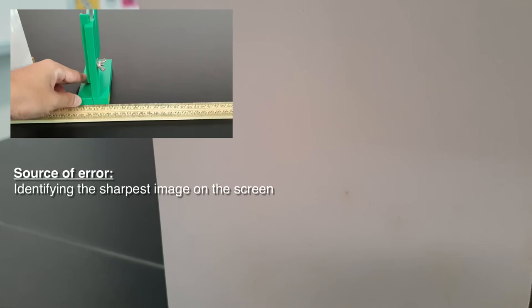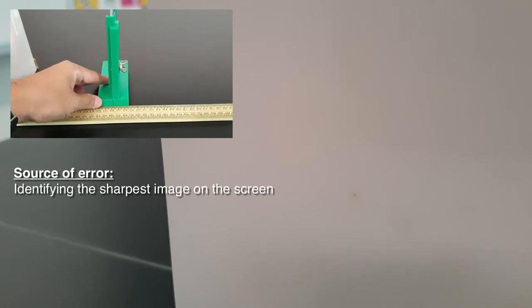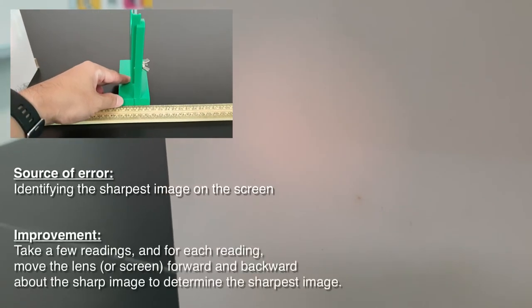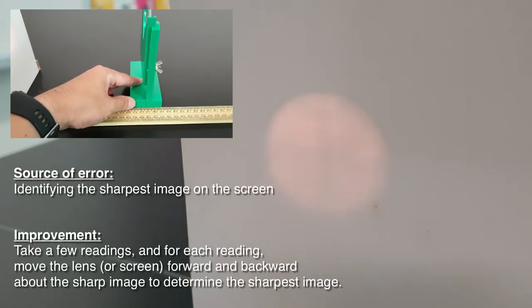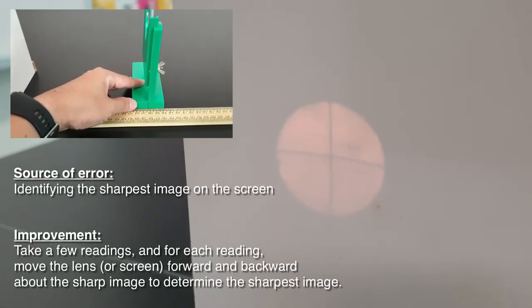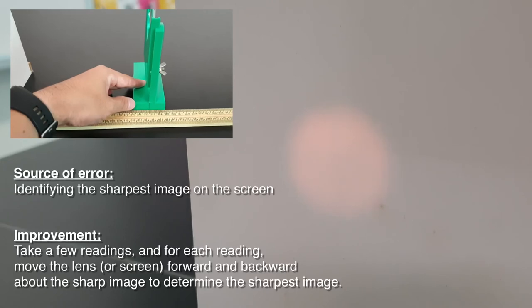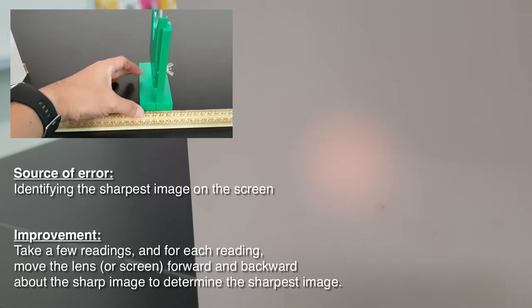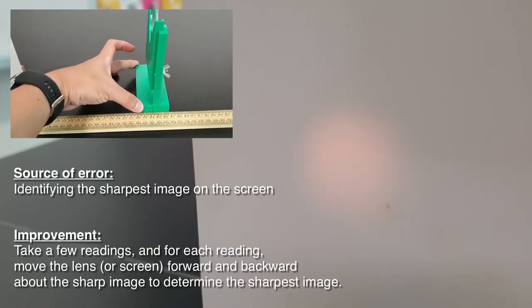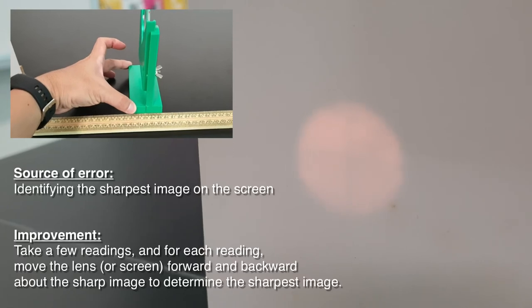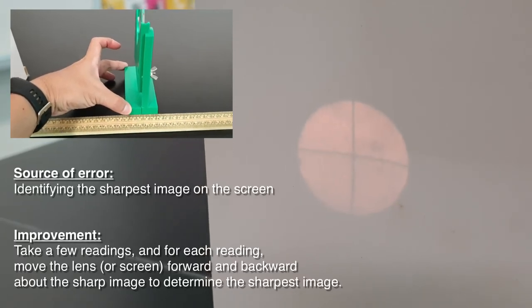As mentioned before, what you need to do is really to shift the lens or the screen, depending on the question, forward and backwards about the sharp image, and then to your best judgment locate the sharpest image. Of course, you do it a few times, so this will help the experiment to be more accurate and improve the source of error.